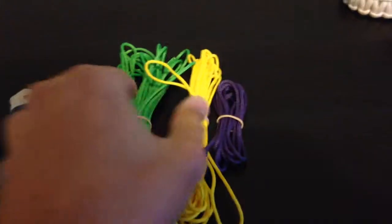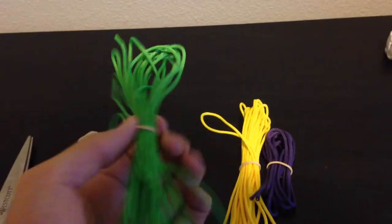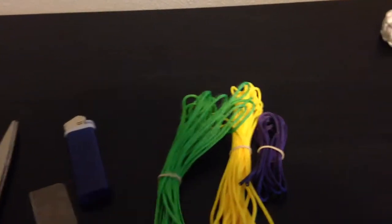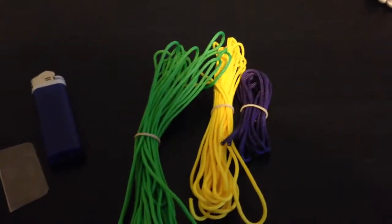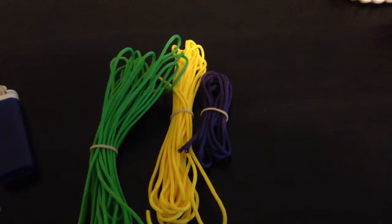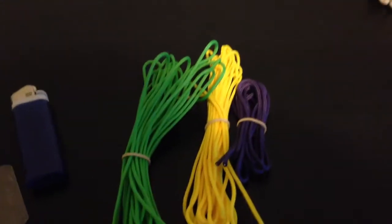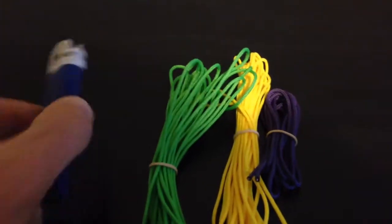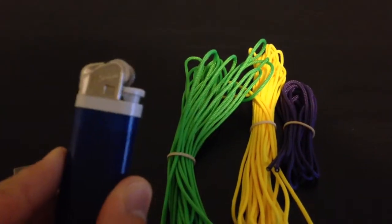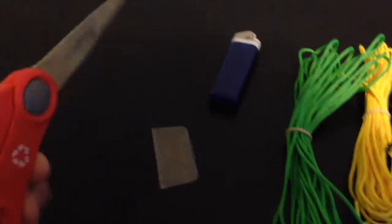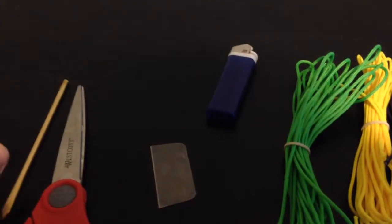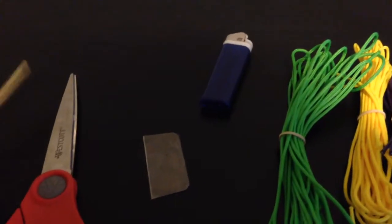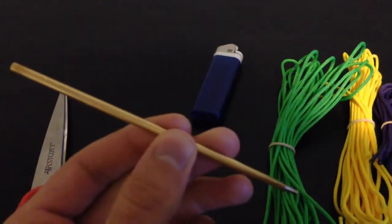First, what you'll need is your paracord. This is type 95 paracord. You can use regular 550 paracord or whatever. You'll need a lighter and some scissors. You don't really need a fid, but if